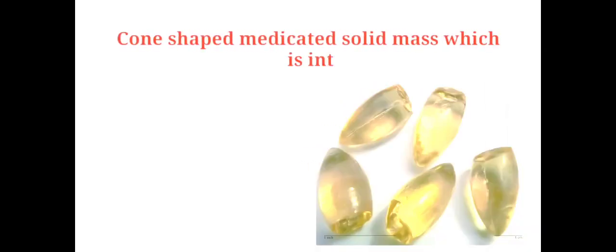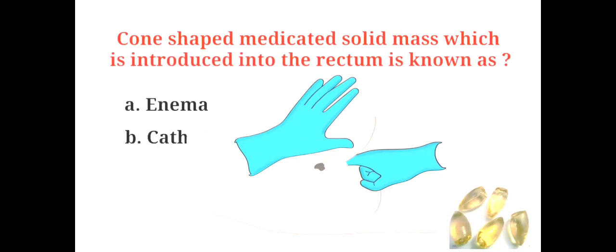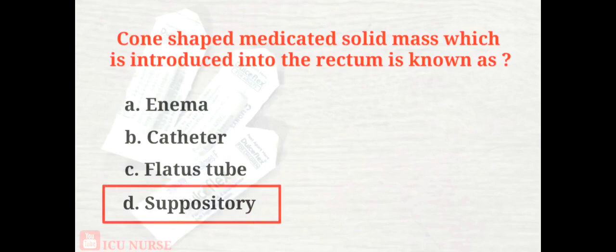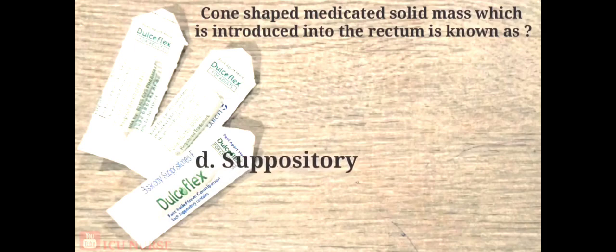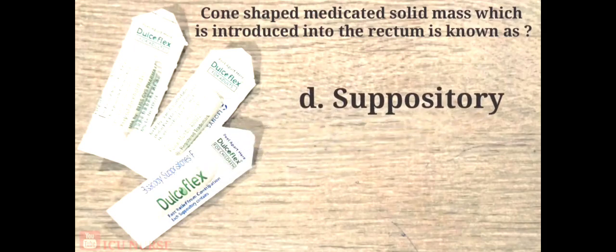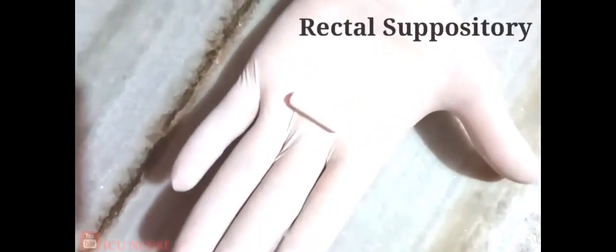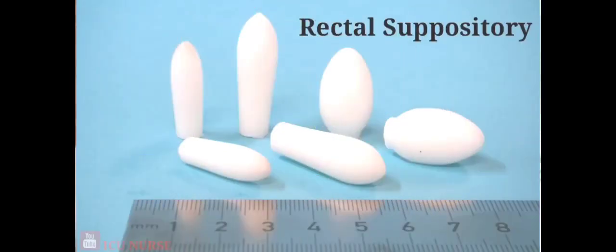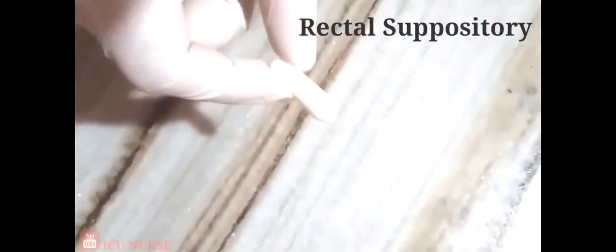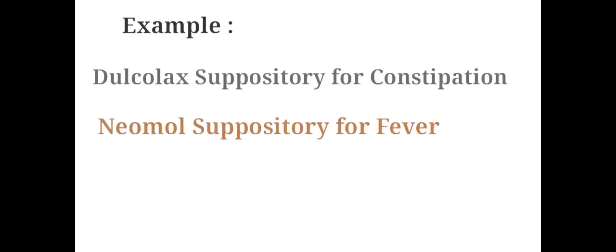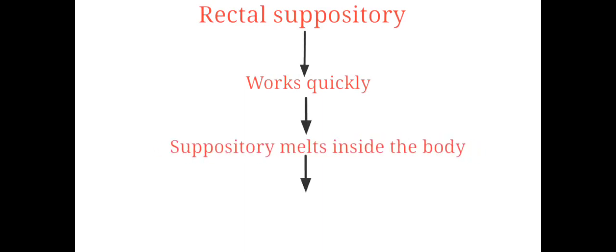A cone-shaped medicated solid mass which is introduced into the rectum is known as a suppository. Medication from a rectal suppository tends to work quickly because the suppository melts inside the body and is absorbed directly into the bloodstream.